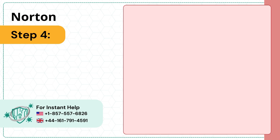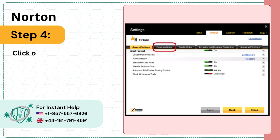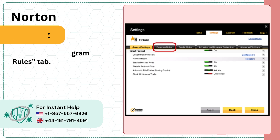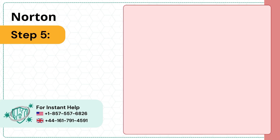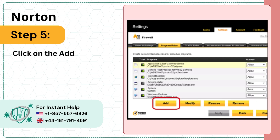Step 4: Click on the Program Rules tab. Step 5: Click on the Add button.